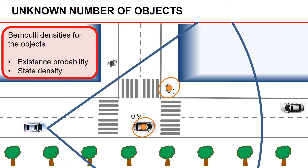That way we can handle objects that disappear from the field of view. If the probability of existence is very low, we can just remove that object estimate.